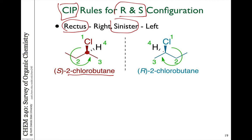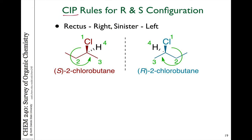That carbon has four different groups, and its mirror image isomer also has a carbon with four different groups. Using our Kahn-Ingold-Prelog priorities based on atomic number, we can see that chlorine is the highest priority group, and hydrogen on this carbon is the lowest priority group, number four. Ranking the remaining groups, we have a CH3 and a CH2CH3.